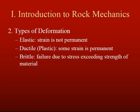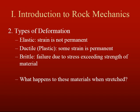The rock is just not able to withstand the stress anymore, and it breaks. I've got three examples that correspond to these three types — think about what happens when they're stretched. The first is a rubber band, the next is chewing gum, and the third is a piece of paper. These three correspond well to the elastic, the ductile, and the brittle.